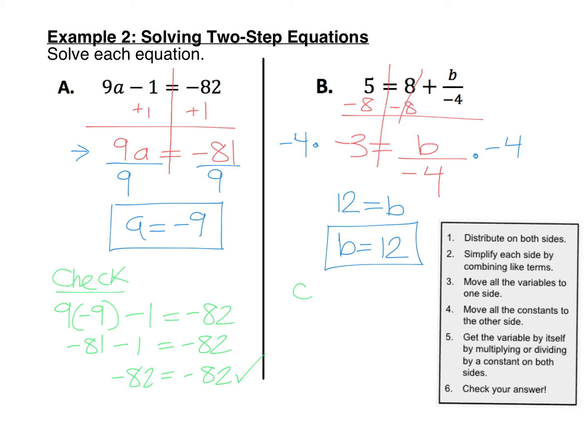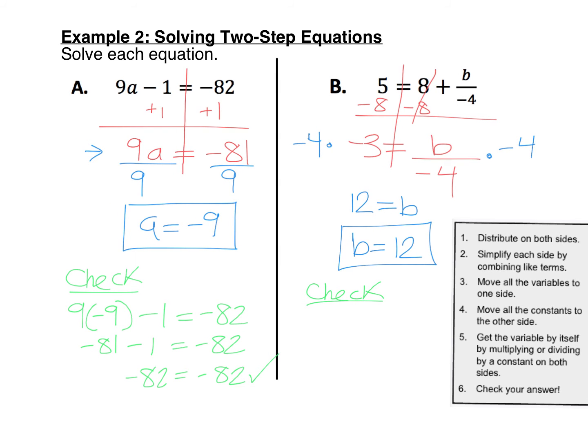Let's double check and make sure that it works. So we go back to the original equation and we replace that b with 12. So 5 equals 8 plus 12 divided by negative 4. Well, 12 divided by negative 4 is negative 3. And 8 plus negative 3 is 5. So it does work since 5 equals 5.